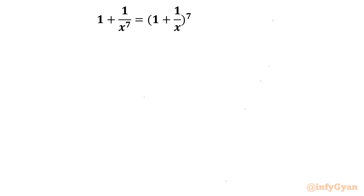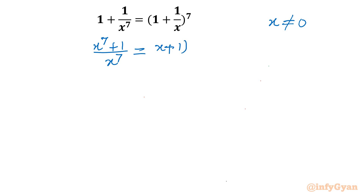First we will conclude a few things. x cannot be 0 because x is in the denominator. Once I take LCM of this equation, I will write (x^7 + 1) over x^7 on the left-hand side, and (x + 1)^7 over x^7 on the right-hand side. Since x is non-zero, we can cancel these two x^7 terms. So we get x^7 + 1 = (x + 1)^7.